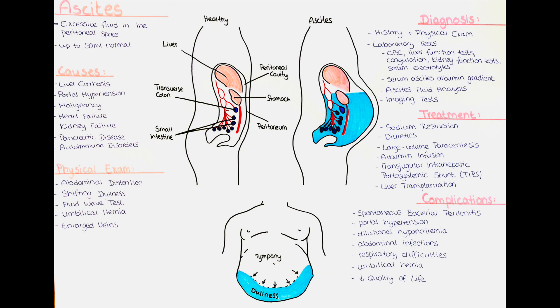Transjugular intrahepatic portosystemic shunt, for short TIPS, is a procedure that involves the creation of a shunt between the portal vein and hepatic vein using a stent. TIPS helps to redirect blood flow and reduce portal hypertension, thereby relieving ascites.